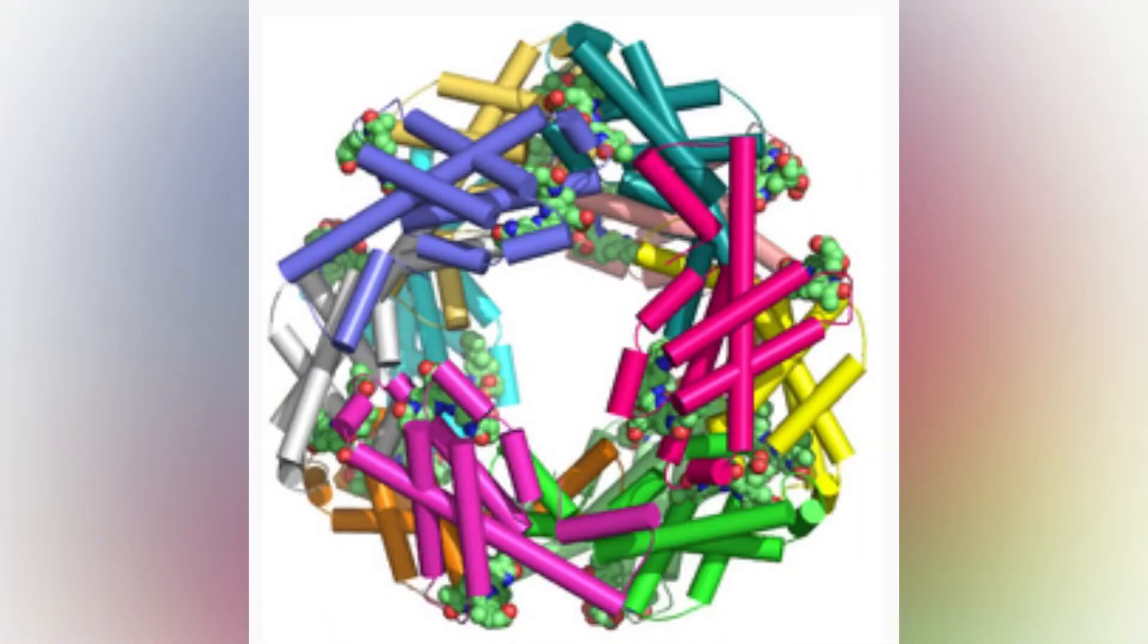Phycocyanin is a pigment protein complex from the light-harvesting phycobiloprotein family, along with allophycocyanin and phycoerythrin. It is an accessory pigment to chlorophyll.